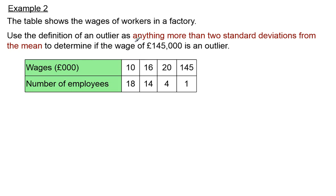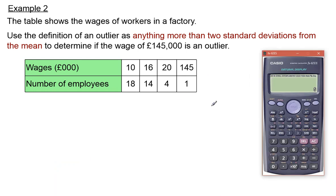In this second example we're going to find an outlier from a frequency table. The table shows the wages of workers in a factory in thousands of pounds. We're going to use the definition that an outlier is anything more than two standard deviations away from the mean to determine if a wage of £145,000 is an outlier. We need to find the mean and standard deviation, so I'll use a calculator.